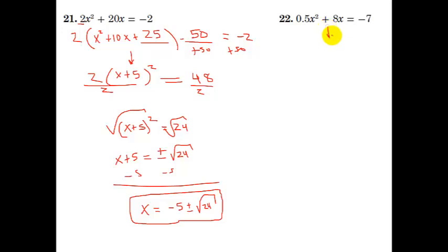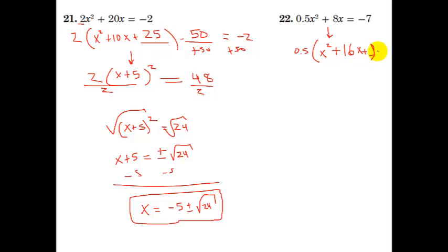We'll do the last example very quickly, and then that'll be the end of this video. We need to factor out 0.5, leaving behind x squared. If you take 0.5 out of the 8x term, you actually get 16, so you have 0.5 times (x squared plus 16x plus blank) minus blank equals negative 7. Half of 16 is 8, and 8 squared is 64.